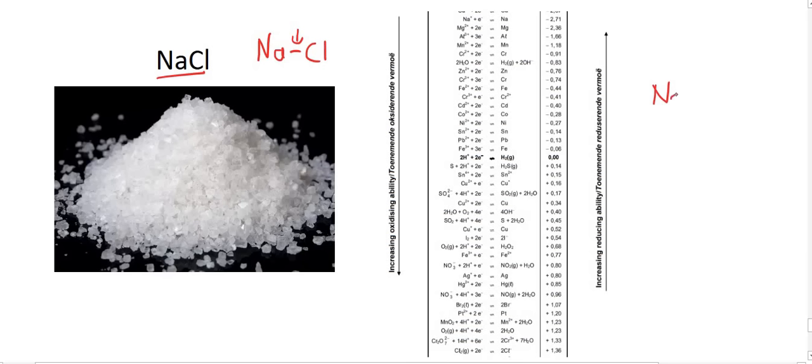In fact, ionic bonds form crystal lattices that look like this. And so if you were to try and separate them, you would have to break every single one of these ionic bonds. So that's going to require a lot of energy. That's our first problem.